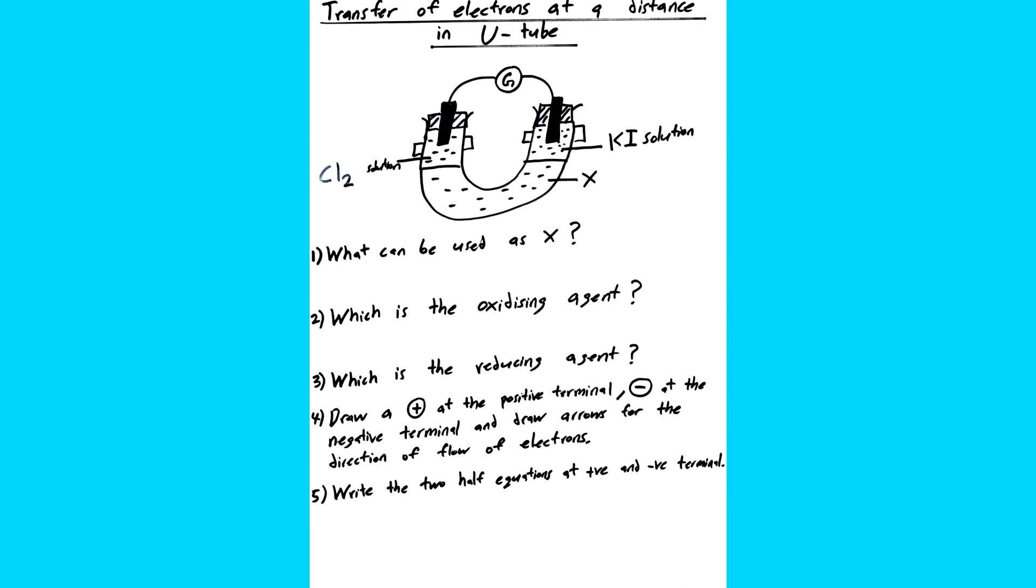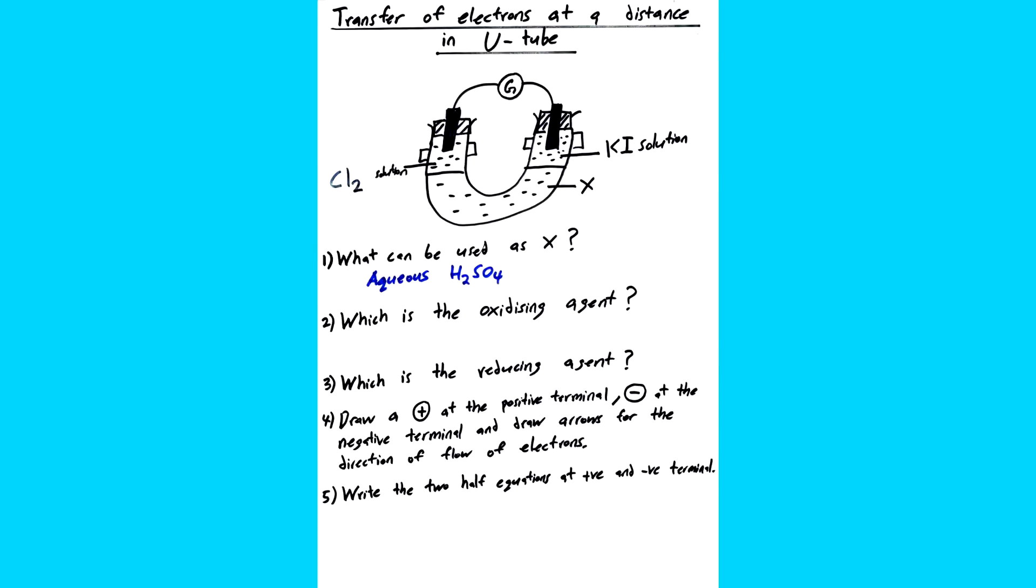So we have YouTube with one side having Cl2 solution and the other side having potassium iodide solution. The solution down the YouTube is called an X. That is all the information that they are giving us. First question is what can be used as X. Now X can be literally anything that conducts electricity. But the safest answer that you can write is aqueous sulfuric acid. So try to memorize this.